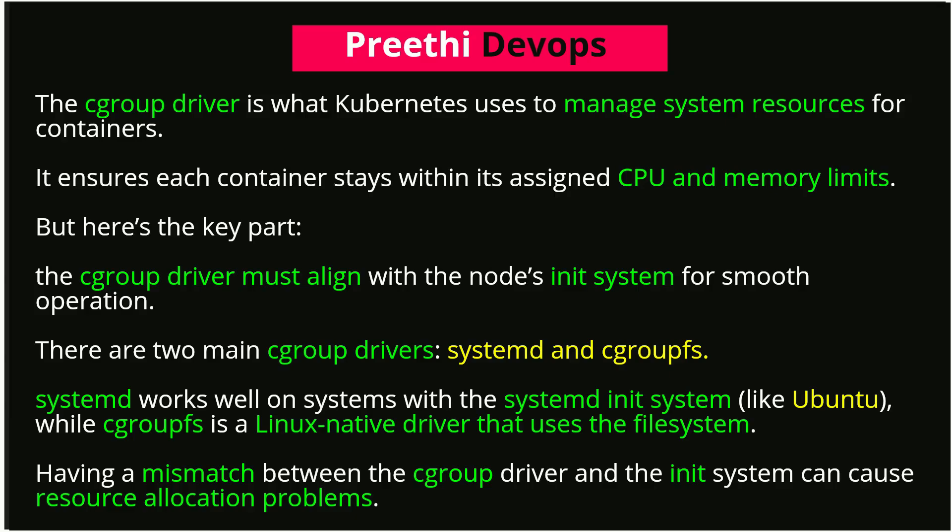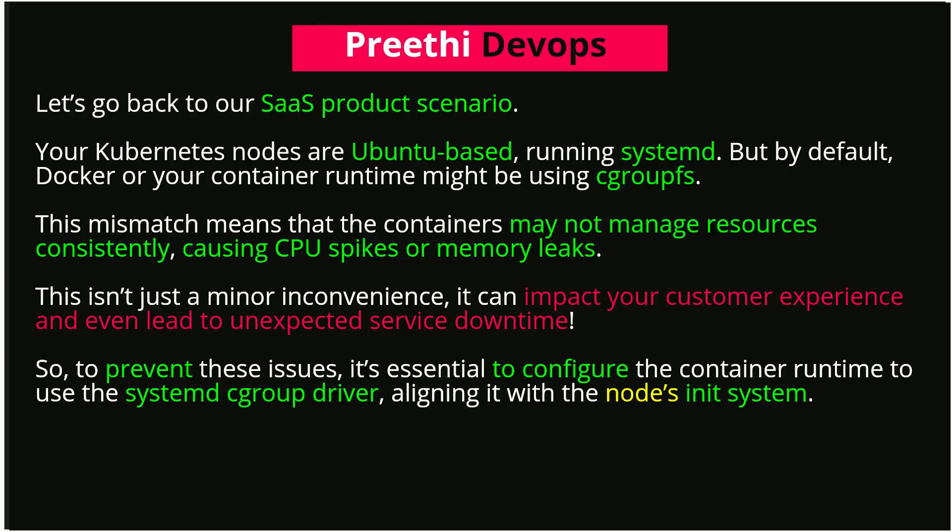Having a mismatch between the cgroup driver and the init system can cause resource allocation problems. In our SaaS product scenario, your Kubernetes nodes are Ubuntu-based, running systemd, but by default Docker or your container runtime might be using cgroups. This mismatch means containers may not manage resources consistently, causing CPU spikes or memory leaks — impacting your customer experience and potentially leading to unexpected service downtime.